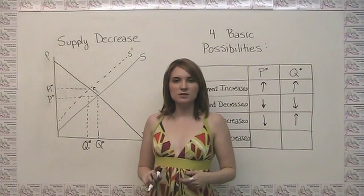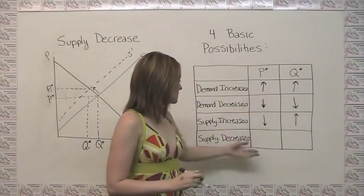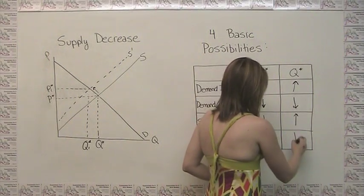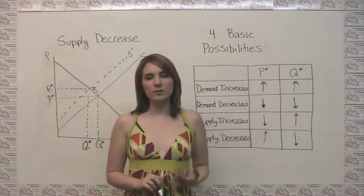we're moving up and to the left in response to a decrease in supply. So we're getting an increase in our equilibrium price and a decrease in our equilibrium quantity.